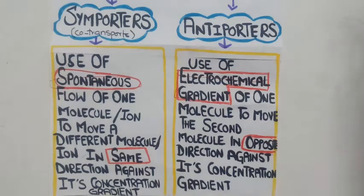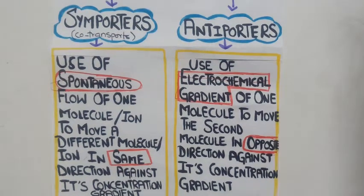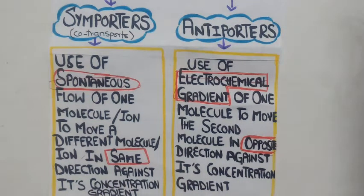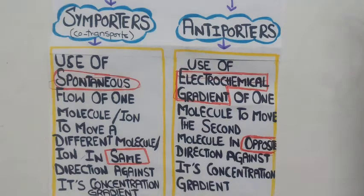Symporters are transmembrane proteins that use the spontaneous flow of one molecule or ion to move a different molecule or ion in the same direction against its concentration gradient. Antiporters are transmembrane proteins that use the electrochemical gradient of one molecule to move a second molecule in the opposite direction against its concentration gradient.